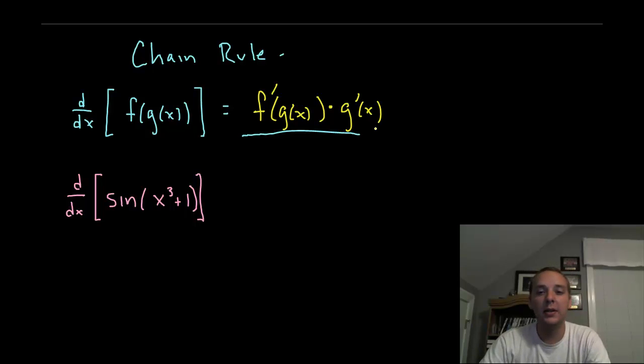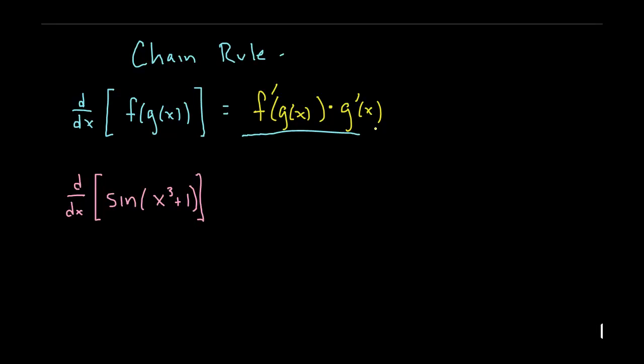You do these derivatives one at a time, you don't just differentiate everything all at once. That's a very common mistake. We differentiate one layer at a time, progressively working our way inwards and just adding each successive term as a product onto the end.